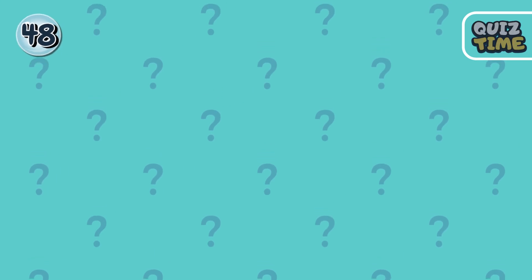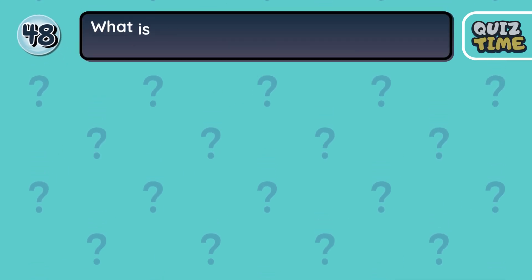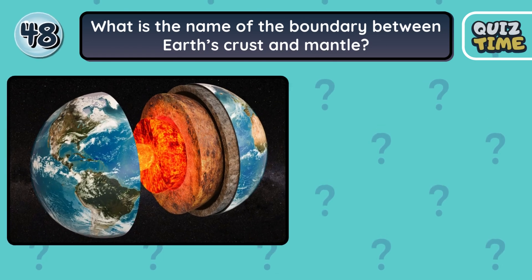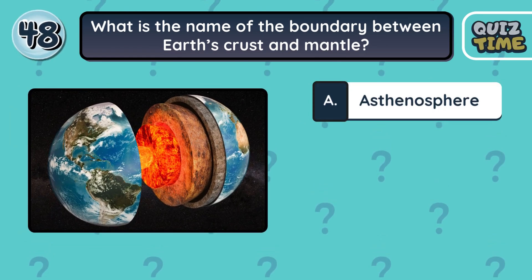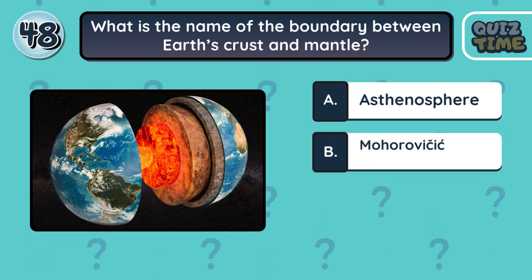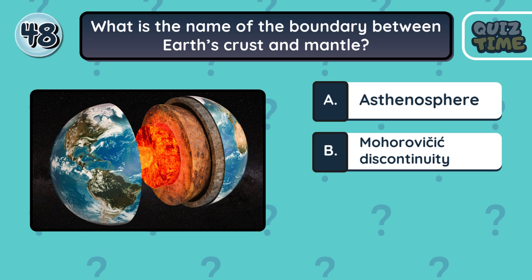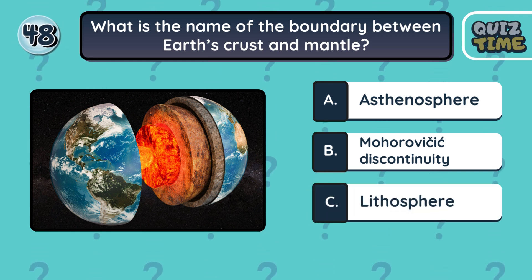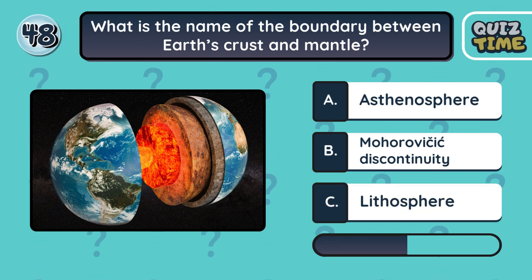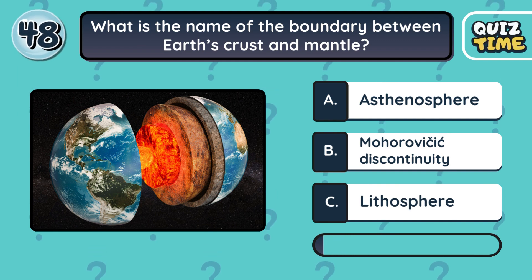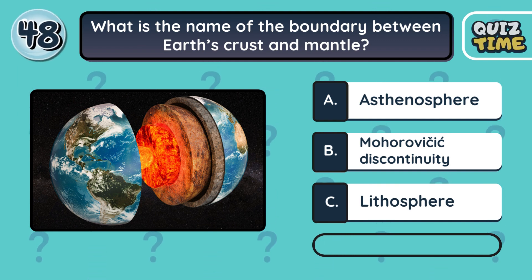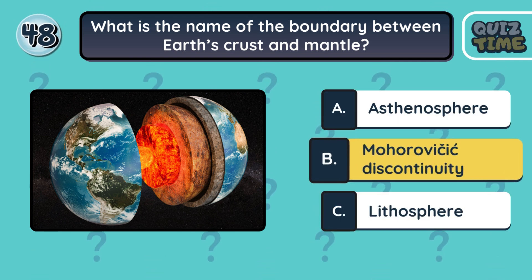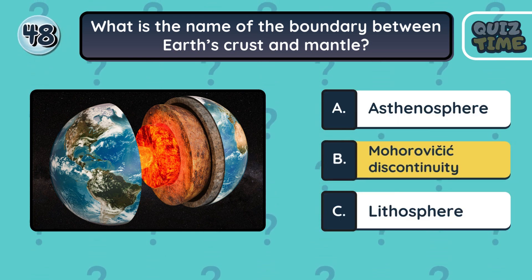Number 48. What is the name of the boundary between Earth's crust and mantle? The correct answer is the Mohorovičić discontinuity.